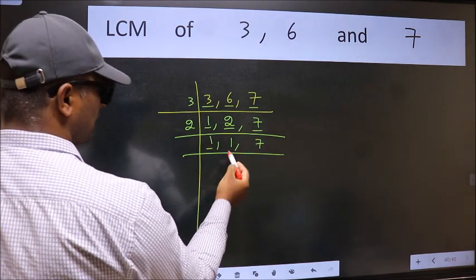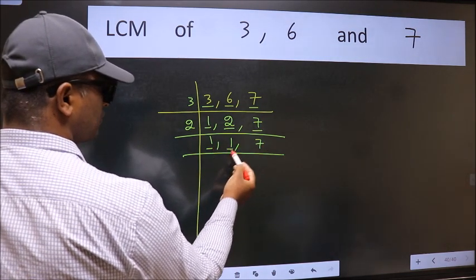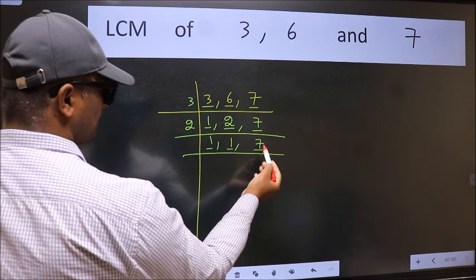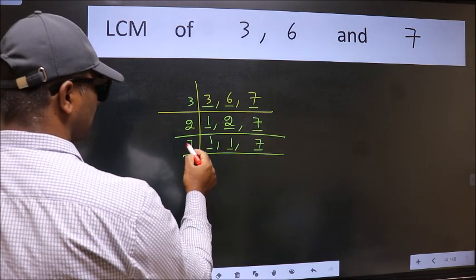Now we got 1 here and here. So focus on the next number 7. 7 is a prime number, so 7 divides 7.